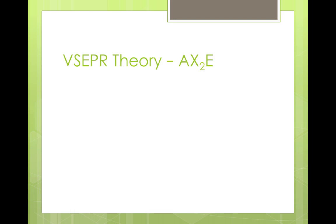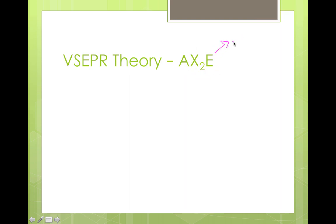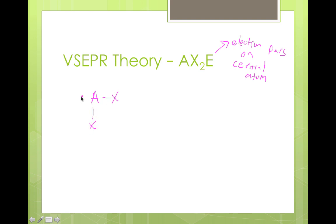The first example involving an electron pair uses the AX2E configuration, where E stands for electron pairs on the central atom. We identify electron pairs on the central atom by drawing Lewis dot structures first. A Lewis dot structure with an electron pair would have the central atom connected to its X atoms with a pair of non-bonding electrons on top. We haven't had a chance to discuss their relationship to three-dimensional shape until now, but they absolutely affect it.